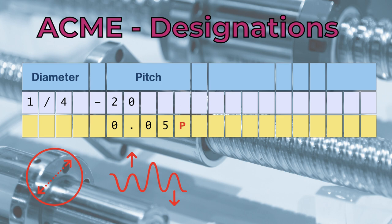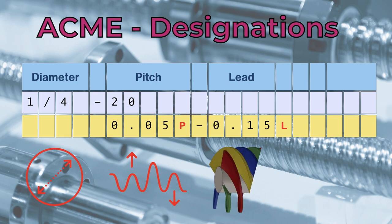On multiple start threads, the pitch must be expressed as distance, followed by another dash, with the lead, followed by the L suffix. For example, 0.05 P-0.15 L, denotes a three-start thread, with a pitch of 20 teeth per inch.